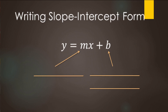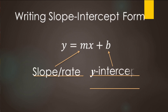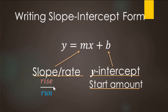Let's go ahead and review slope-intercept form. The coefficient — the number in front of the x, or the number in the place of m — that's going to be the slope or the rate. And then the constant term, the one that's being added or subtracted to the x, that is going to be the y-intercept or start amount. Remember slope — that's rise over run. And then the y-intercept is an ordered pair or a coordinate where we have zero for the x value, and then the y value — that is the y-intercept.